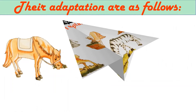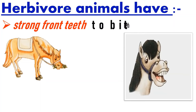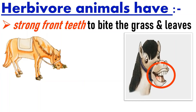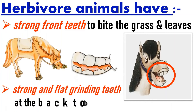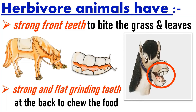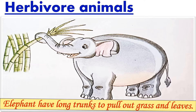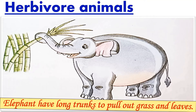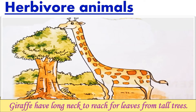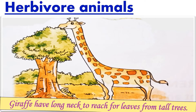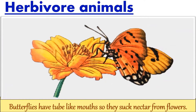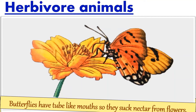Herbivore animals have strong front teeth to bite the grass and leaves. They also have strong and flat grinding teeth at the back to chew the food. Herbivore animals like elephants have a long trunk to pull out grass and leaves. Giraffes have a long neck to reach the leaves from tall trees. Butterflies have a tube-like mouth to suck the nectar from flowers.